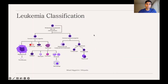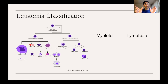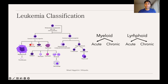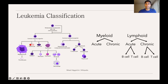We classify leukemias as either myeloid or lymphoid, and on top of that as either acute or chronic. Acute means symptoms develop rapidly and become very severe quickly; chronic refers to a slowly developing, indolent course with milder symptoms. Specifically within the lymphoid types, since lymphocytes can become T or B cells, the lymphoid leukemias — both acute and chronic — can be further classified as B cell type or T cell type.